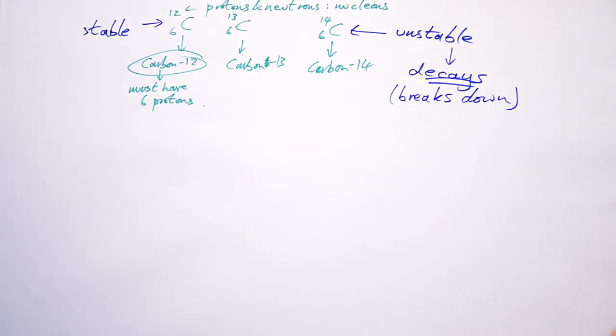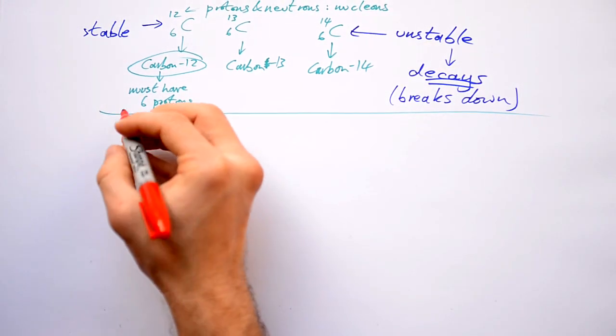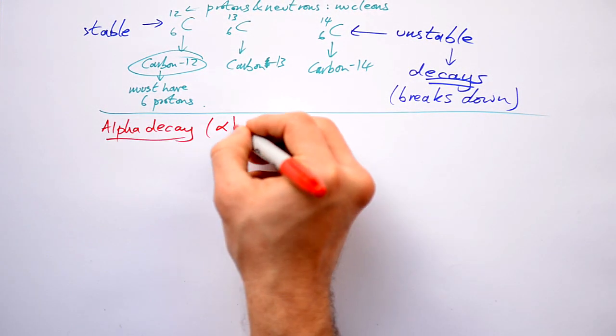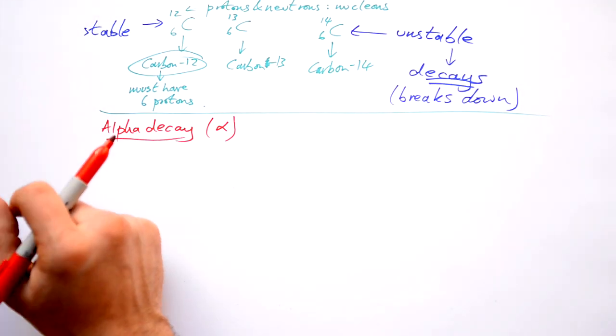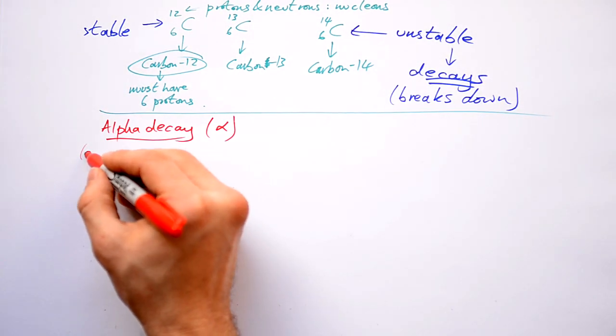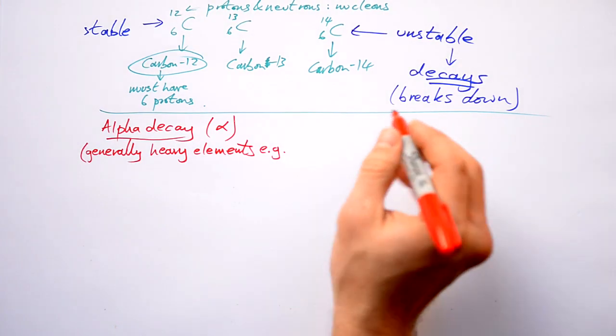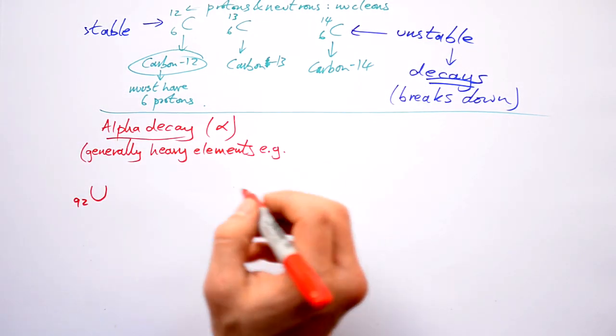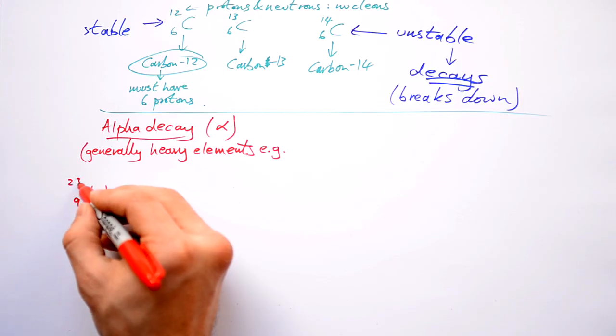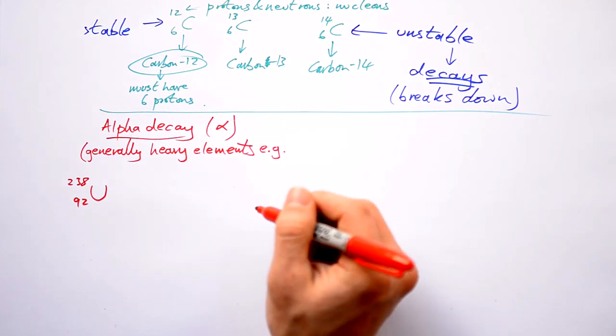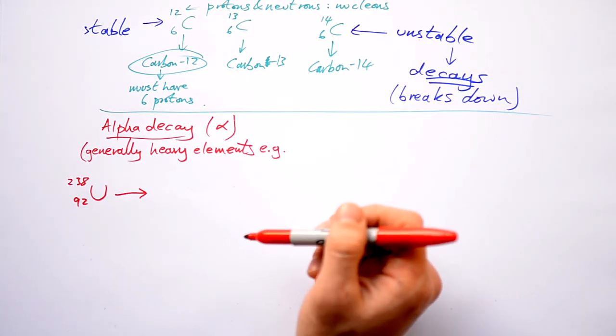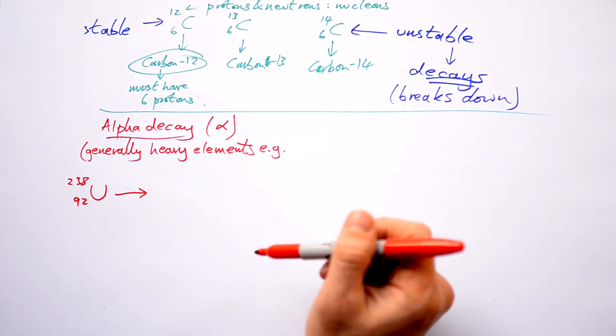Now, there's a couple of things that can happen when an atom breaks down. The first type that we have is alpha decay. Alpha is the first letter of the Greek alphabet. It looks like a fish. Now, this happens with generally heavy elements like uranium. It's got 92 protons. It's massive. And its mass number is 238. This is a specific isotope of uranium. This is uranium-238.